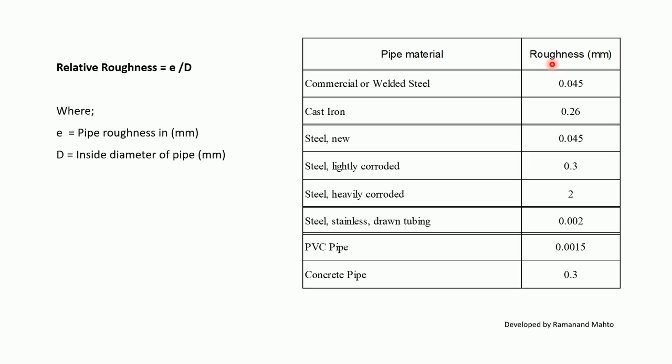Pipe roughness values by material: commercial or welded steel pipe: 0.045 mm; cast iron: 0.26 mm; steel new: 0.045 mm; steel lightly corroded: 0.3 mm; steel heavily corroded: 2 mm; stainless steel drawn tube: 0.002 mm; PVC: 0.015 mm; concrete pipe: 0.3 mm.